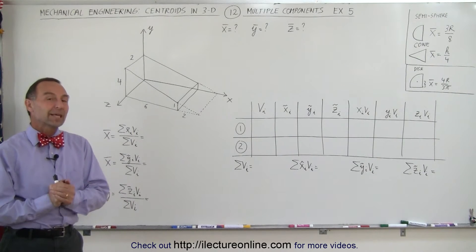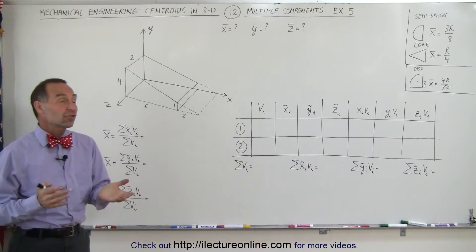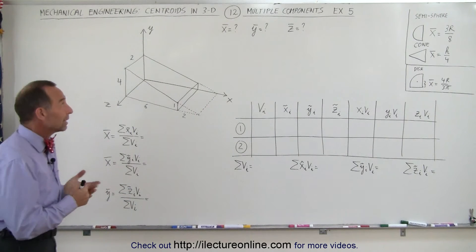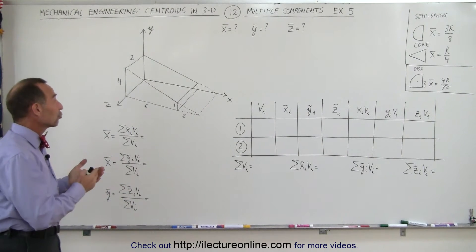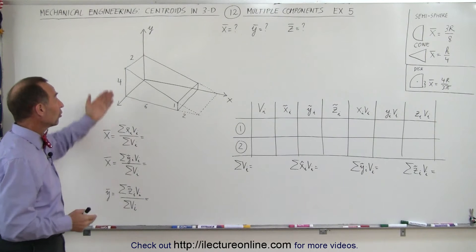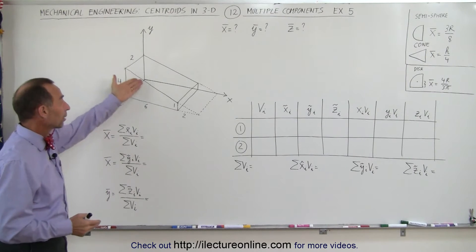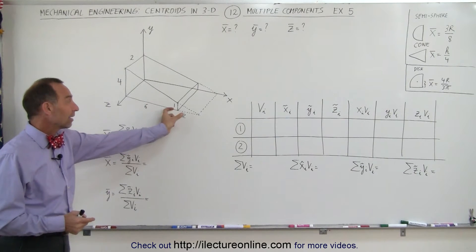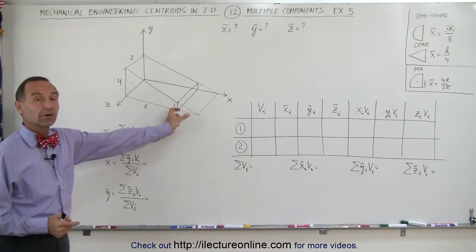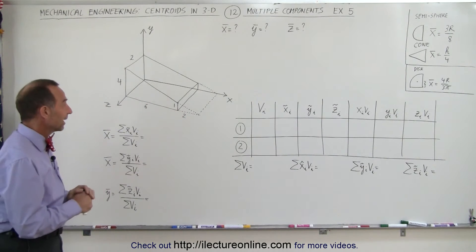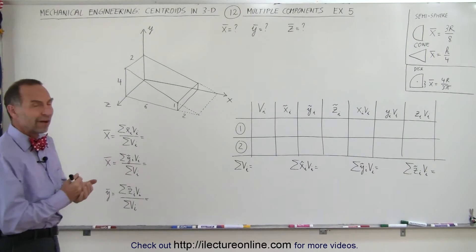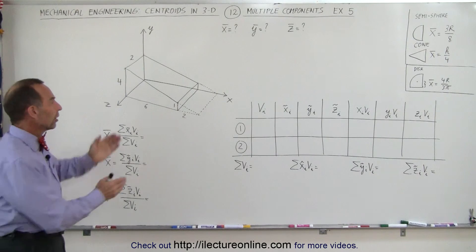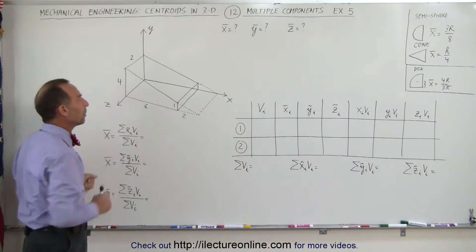Welcome to ElectronLine. Here we have an interesting shape for which we need to find the centroid. Notice that it's a triangular wedge but has the front part missing. How do we find the centroid of the remaining part?